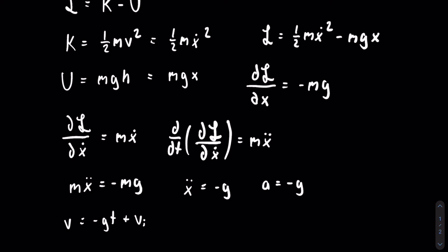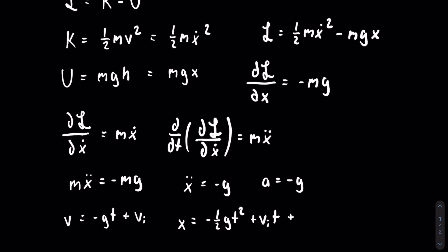From here we could take another integral with respect to time to get the position function. We will get that the position is equal to negative one half g t squared plus the initial velocity times t plus the initial position.